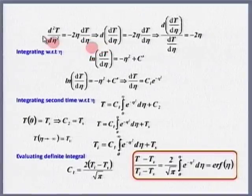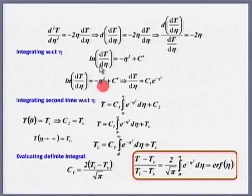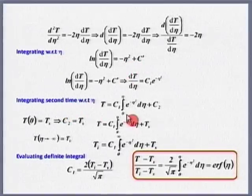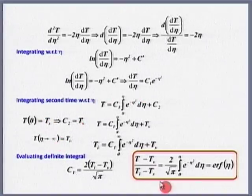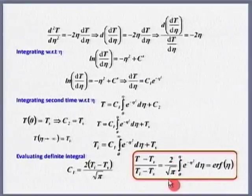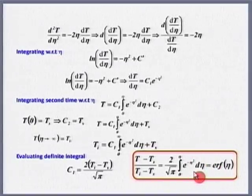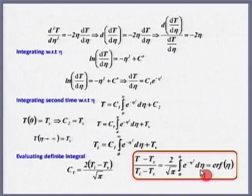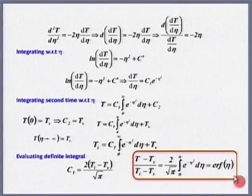Now it is mathematics, and I tend to go fast when it is mathematics. So d²T/dη² = −2η · dT/dη. Integrating this once, and again integrating, gives log(dT/dη) = −η² + C'. Integrating once more and substituting the boundary conditions, I get (T − T_s)/(T_i − T_s) = (2/√π) ∫₀^η e^(−η²) dη. Most of you are familiar with this — it is the error function from mathematics.